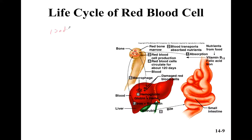Red blood cells have about a 120-day lifespan. When they get old and pass through the spleen and the liver, macrophages will destroy them. The hemoglobin is broken down into heme and globin. The iron goes back to the red bone marrow so it can be used to make more red blood cells. The byproducts — bilirubin and biliverdin — get excreted in the bile, giving a lot of color to your feces.